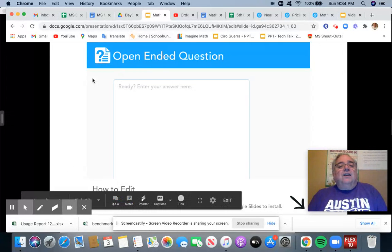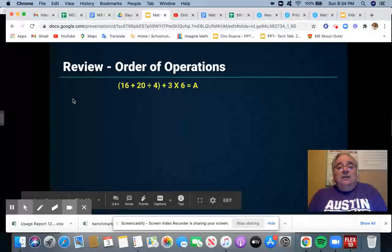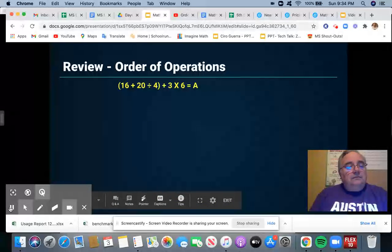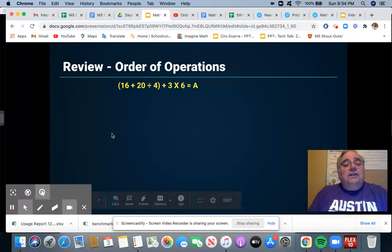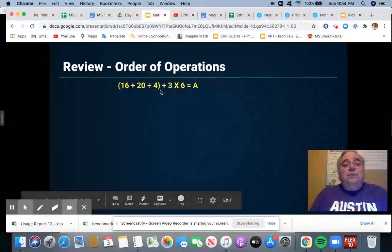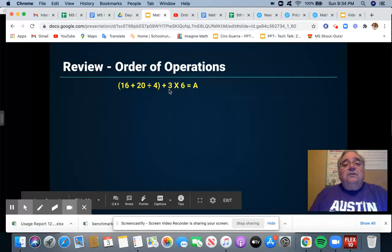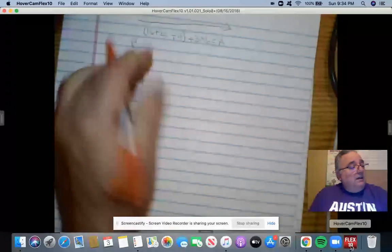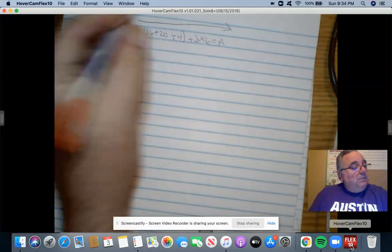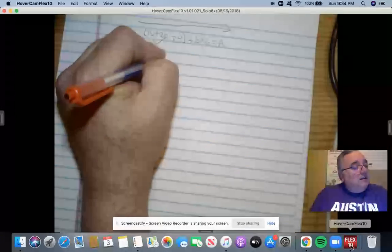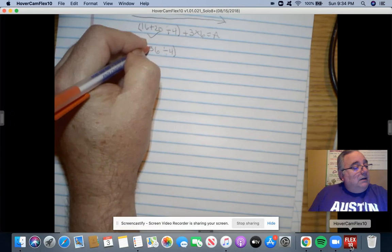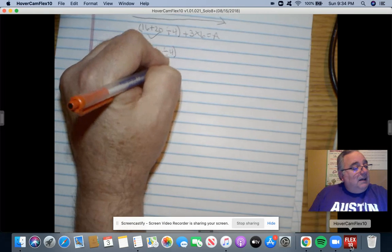Now let me go ahead and go through the problem that we're going to be working. Parentheses 6 plus 20 divided by 4 parentheses plus 3 times 6 equals A. So let's work it out. If you remember, I had an arrow here that we have to work it from left to right. Here's the parentheses. Let me work in the parentheses first. I get 36. Then I got to divide that by 4 because we're still in the parentheses. That gives me a 9.